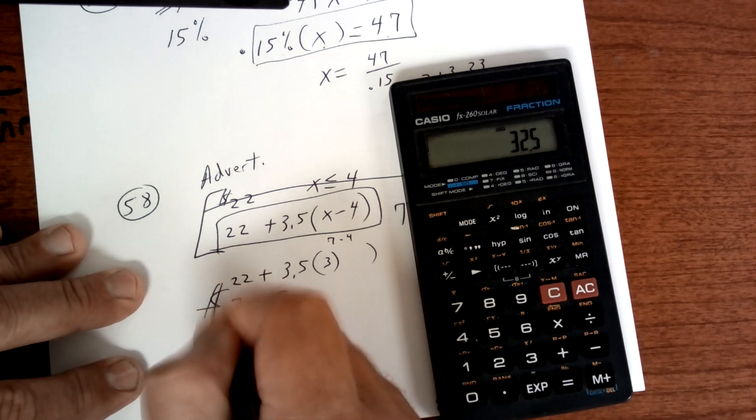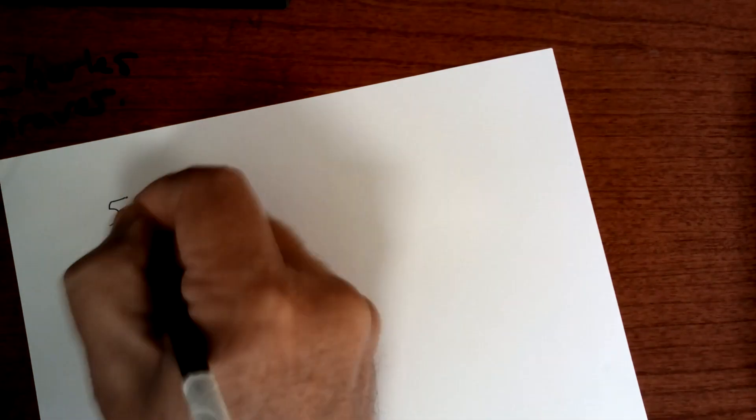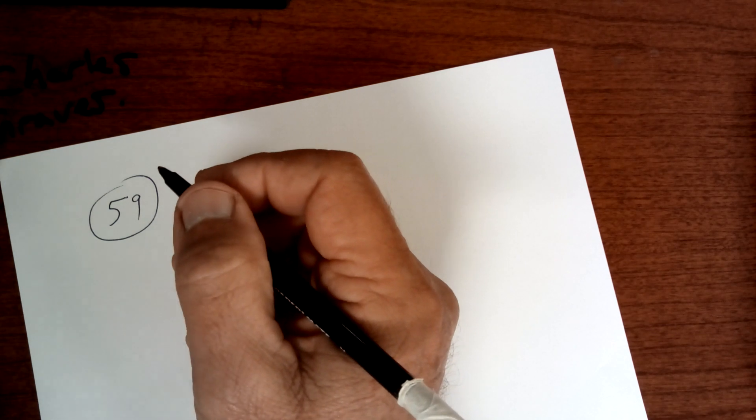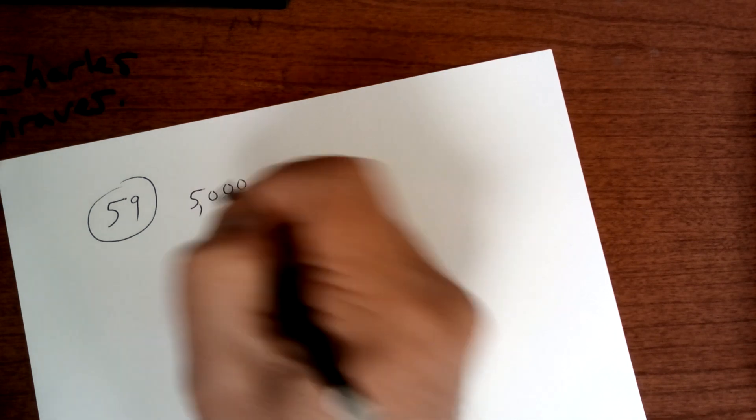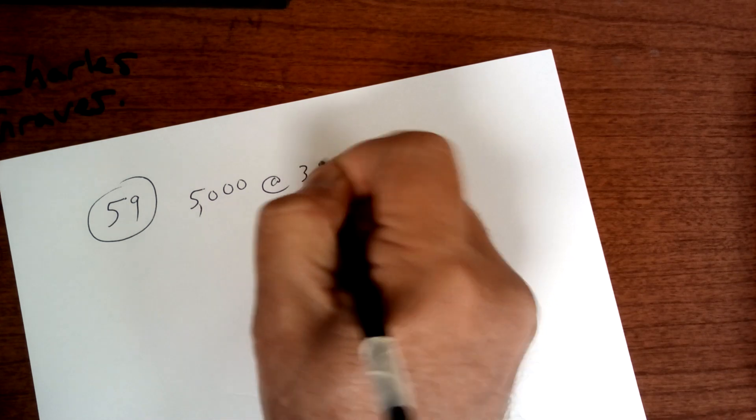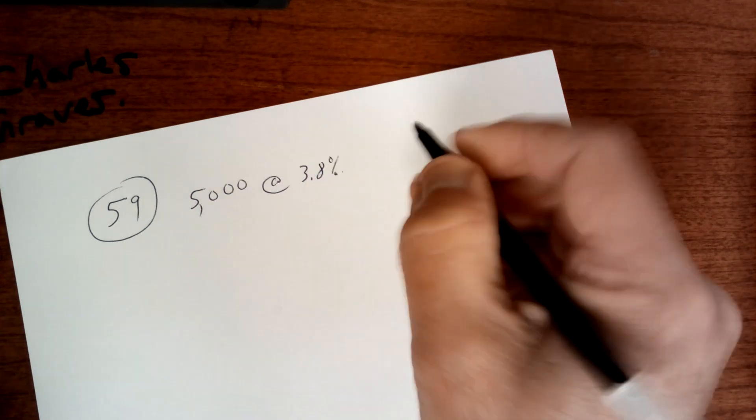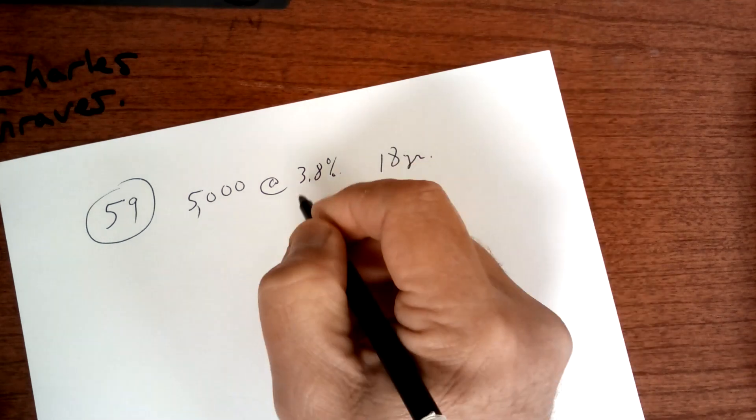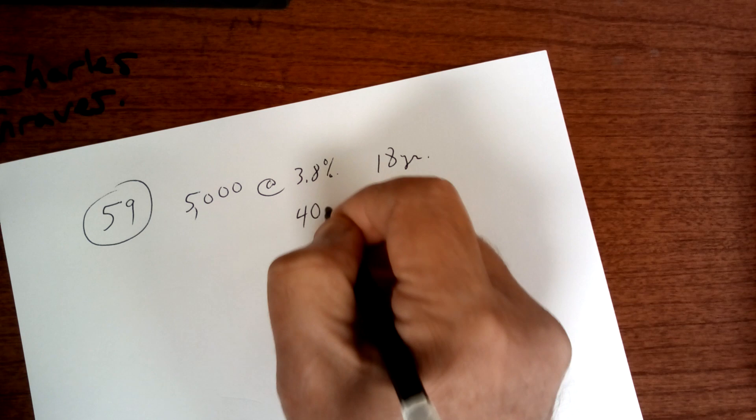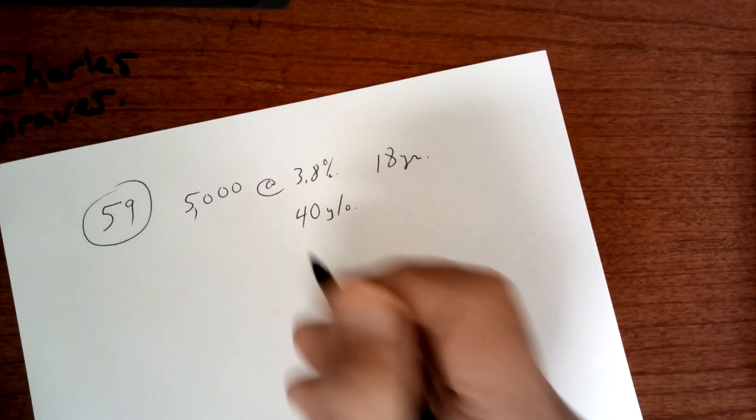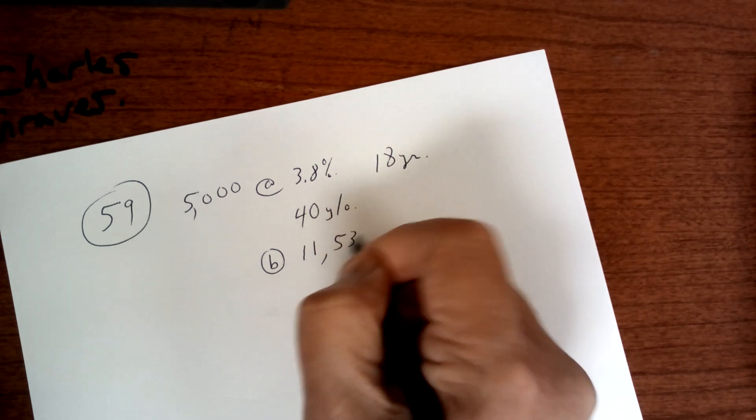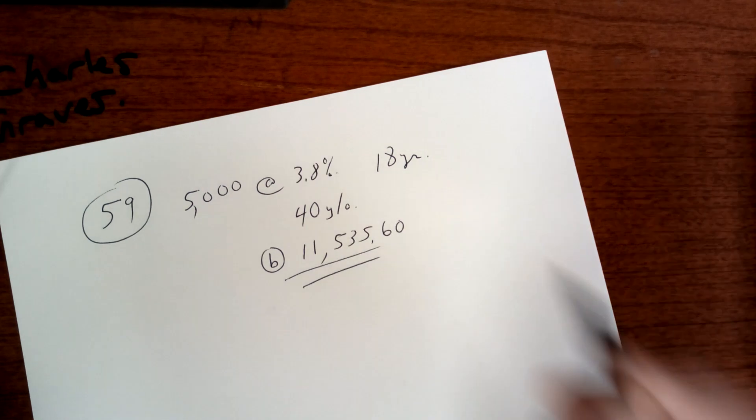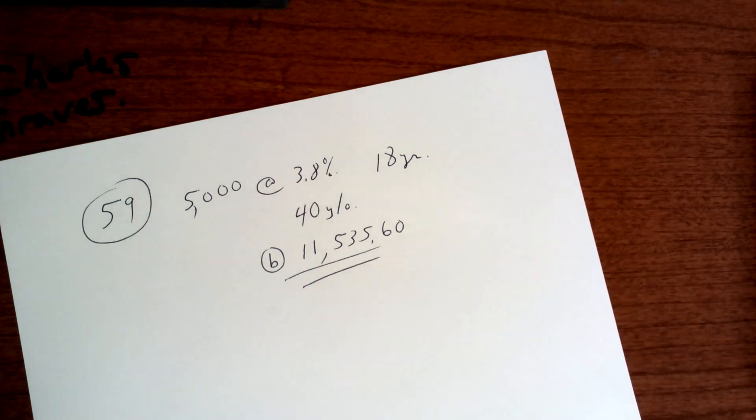Okay, all right, let's keep moving. 59. This one is, I think, a logarithmic. And this is a $5,000 deposit at 3.8% interest. You're going to have to memorize this one. 18 years when he's 40 years old. How much money is going to be in there? And the answer is going to be B, $11,535.60. So this one is a given. You're going to have to remember that one.